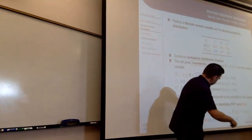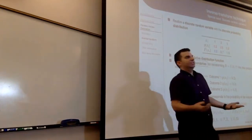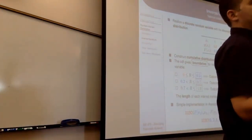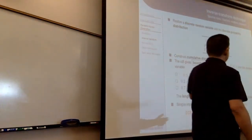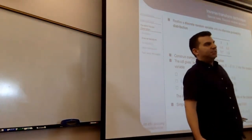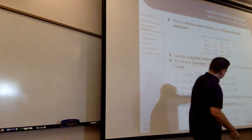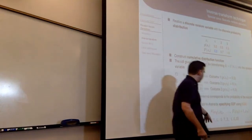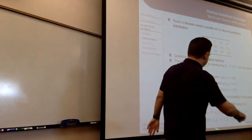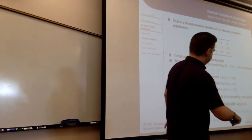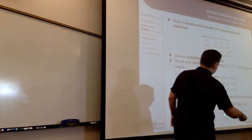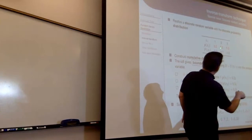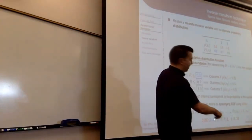If you encode this example in an Arena expression — say, figuring out service time for a particular order where there are really only three service times — you can put this DISC function into a cease-delay-release as the delay. It will then draw outcome 2 most frequently, 50% of the time, but occasionally draw outcomes 1 and 3 as well.